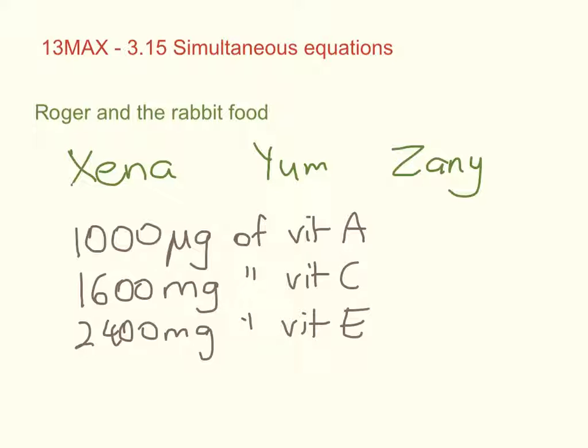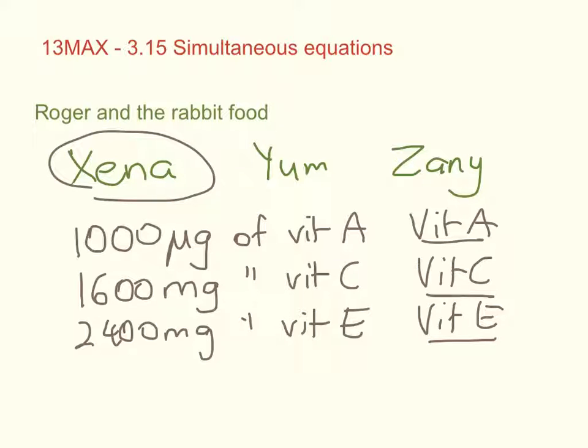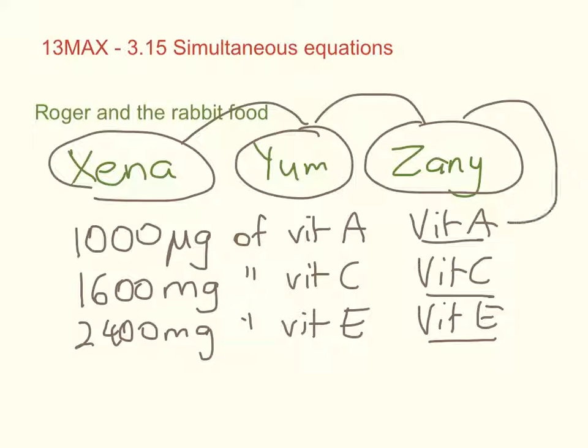So when we think about our equations, we're going to have one equation that's about vitamin A, one equation that's about vitamin C, and one equation that's about vitamin E. We are not going to have one equation about Xena, one about Yum, and one about Zany. These are going to feed into, excuse the pun, these equations. So if you start by thinking about the three equations, what they're going to be, I think that's a good place to start.